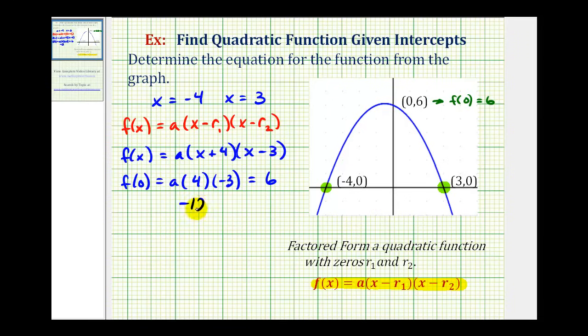We would have negative 12a equals positive six. Divide both sides by negative 12, and we have a equals negative one-half.